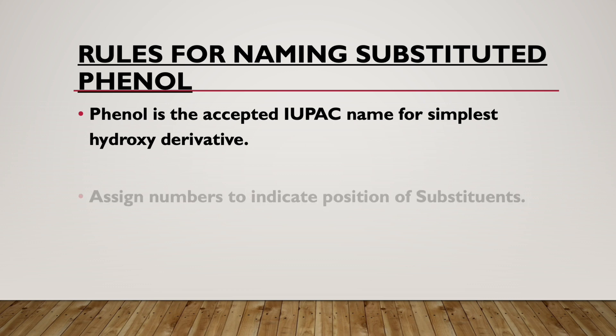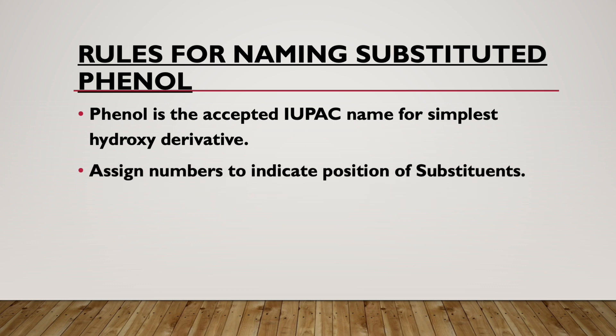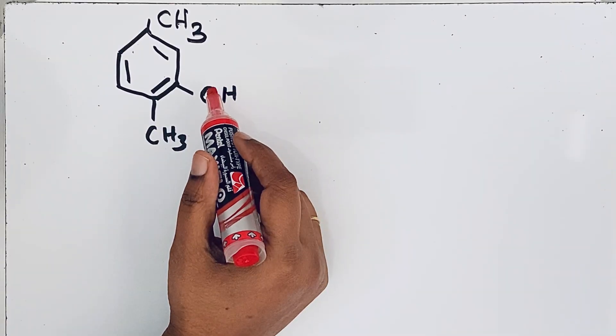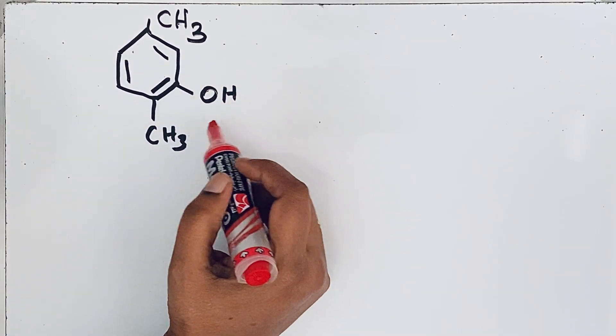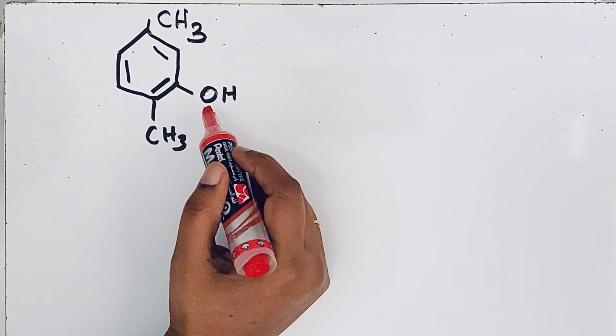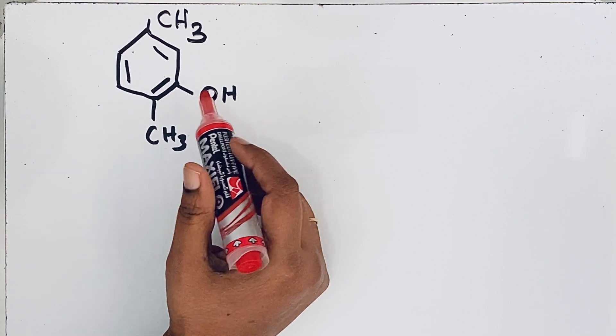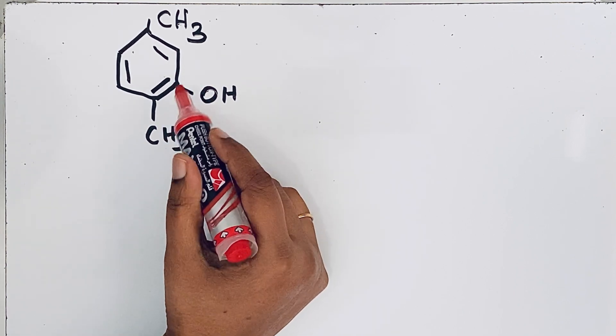The position of substituents are indicated by numbers. Let us look at the structure. This is a substituted phenol. These substituents should get numbers.